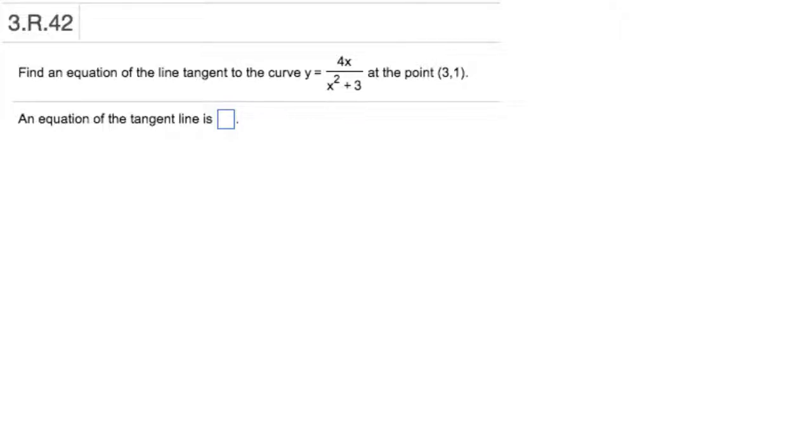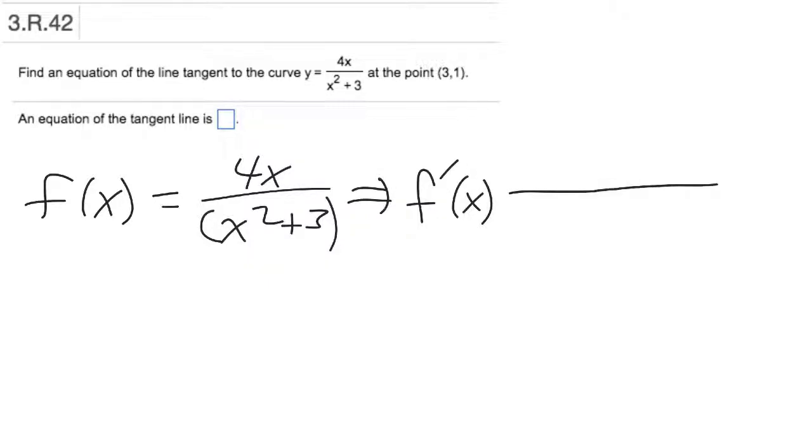So we know that the slope of a line comes from the derivative. And so if we set this up with our notation we can just say that f(x) is referring to the function 4x over x squared plus 3. That's not enough room. Hang on. Let's put it down below.